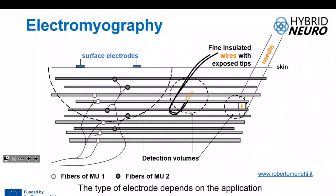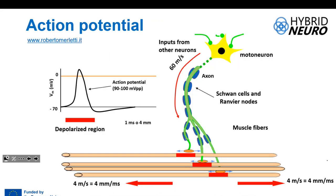If we want to detect the electrical activity of the muscle, we can use different electrodes. We can place electrodes on the surface of the skin — referred to as surface electrodes — or we can use intramuscular electrodes that are introduced into the muscle, which can be wires or needles. Which electrode we use depends on the application.